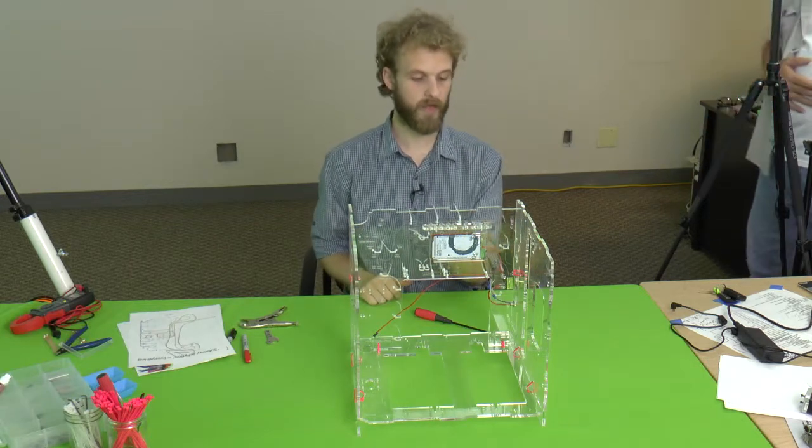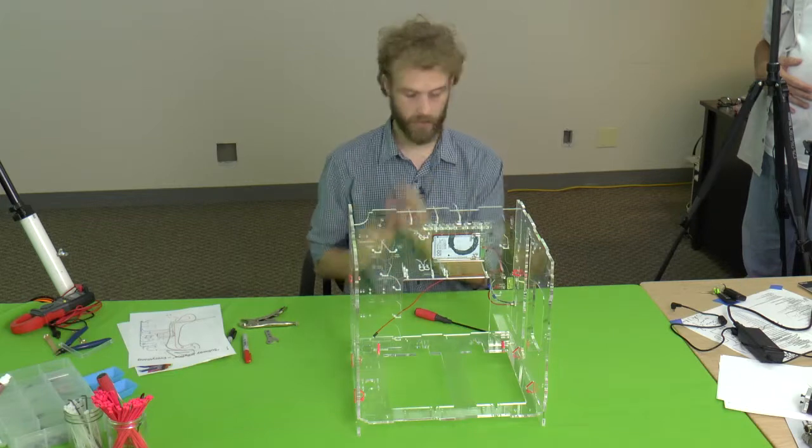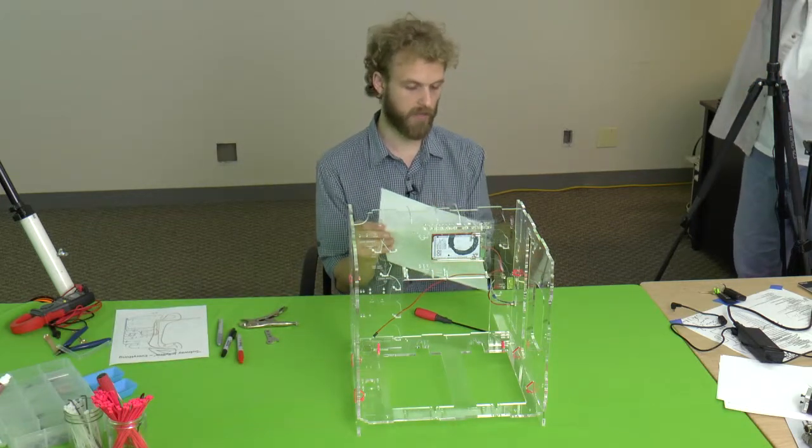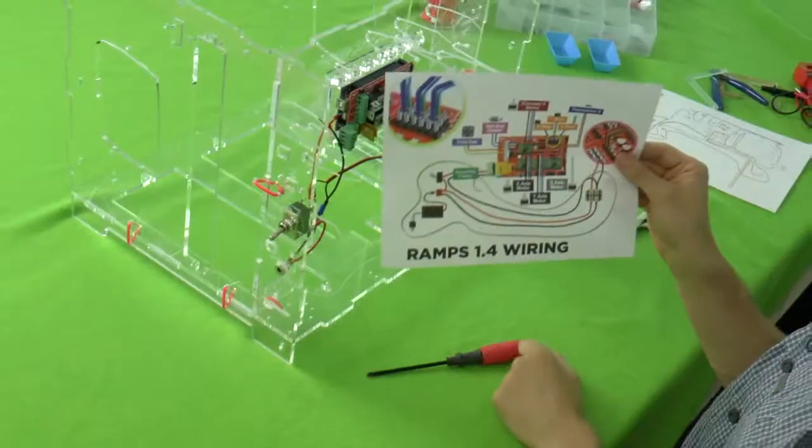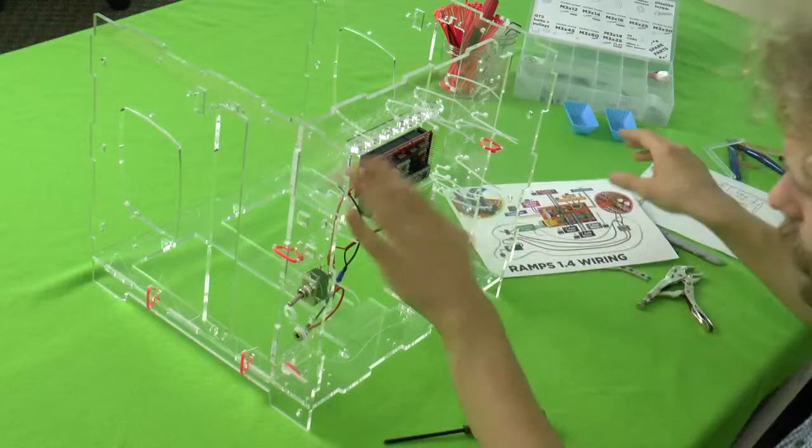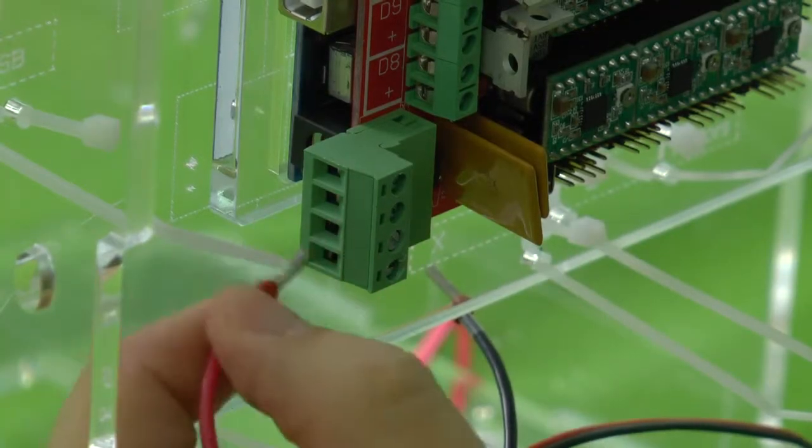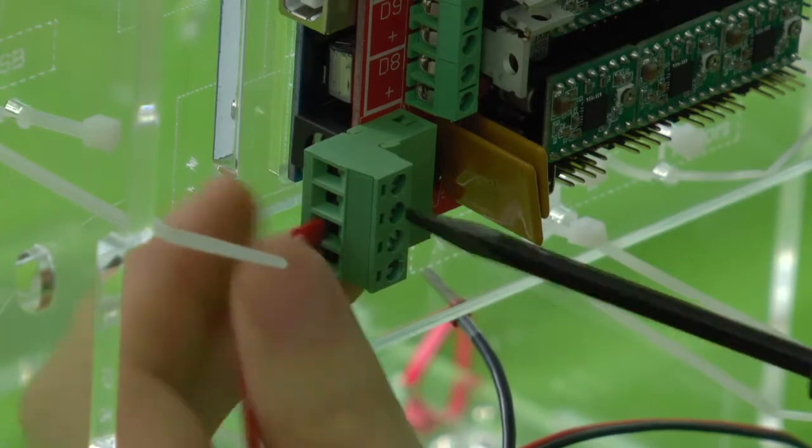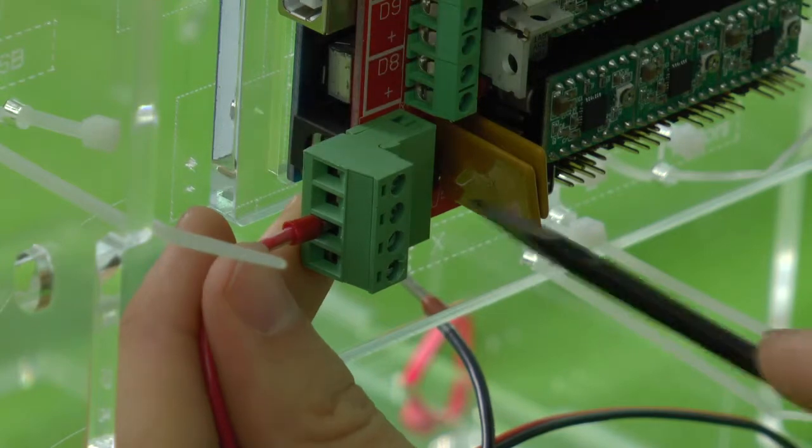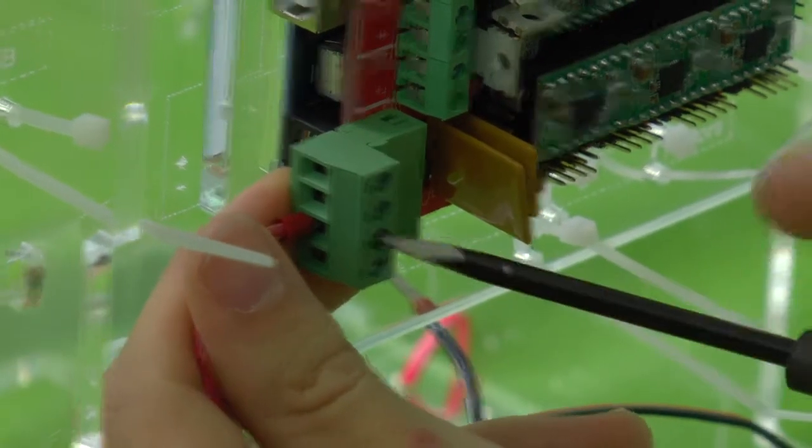And now we're going to attach the wires into the Arduino, the power supply to the Arduino. A major step. To help you out we have these diagrams that are available for download somewhere around this video. There's also etchings on the printer itself. Remember red is always plus. It goes into the second hole from the bottom here. There's plus on the etching underneath as you can see, and there's also plus right here on the ramps board itself.